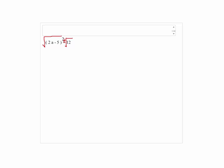So by taking the square root, you get 2a minus 5 on the left hand side and on the right hand side, we have the plus minus radical 12.